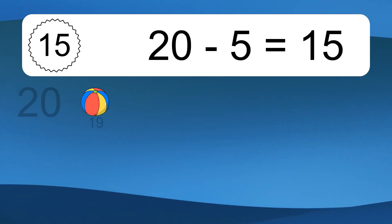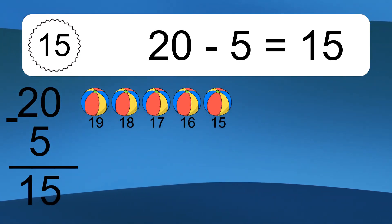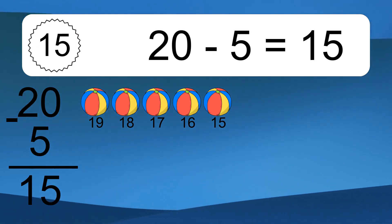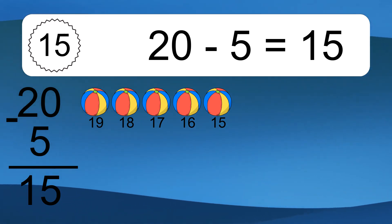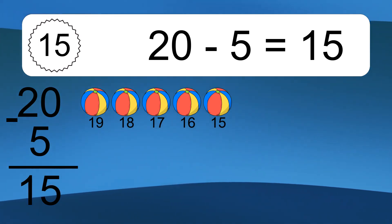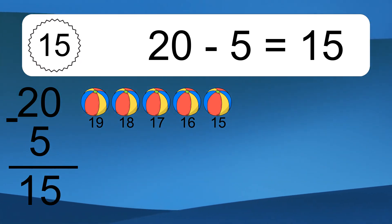20 minus 5 equals 15. Let's count it: 19, 18, 17, 16, 15.